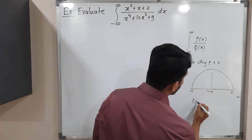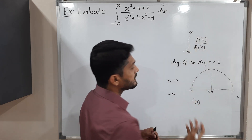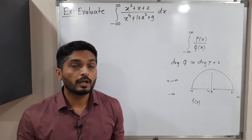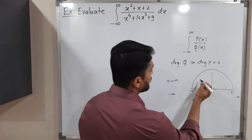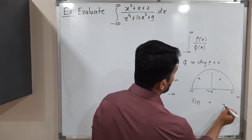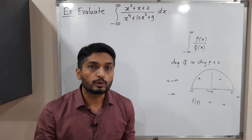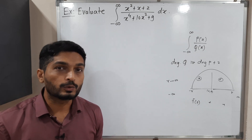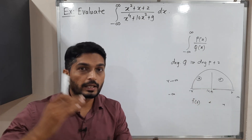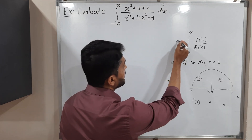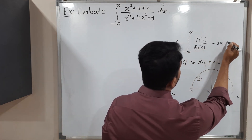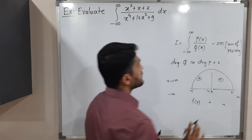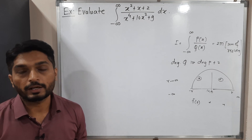We then consider the function f(z) — that means replace x by z everywhere. We find the singular points, which are points where the function is not analytic. Some singular points can lie in various positions; we consider only those lying in the upper half-plane, find residues at those points, and the value of the integral equals 2πi times the sum of those residues.